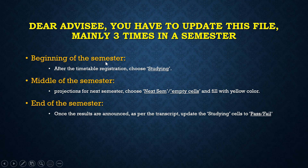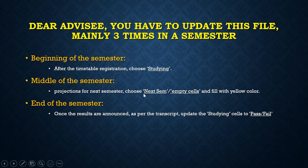In the beginning of the semester, after timetable registration, you have to choose the option 'studying.' In the middle of the semester, to choose courses for the next semester — we call it projections — you choose the option 'next semester.' At the end of the semester, you convert all the studying cells into pass or fail based on the results.